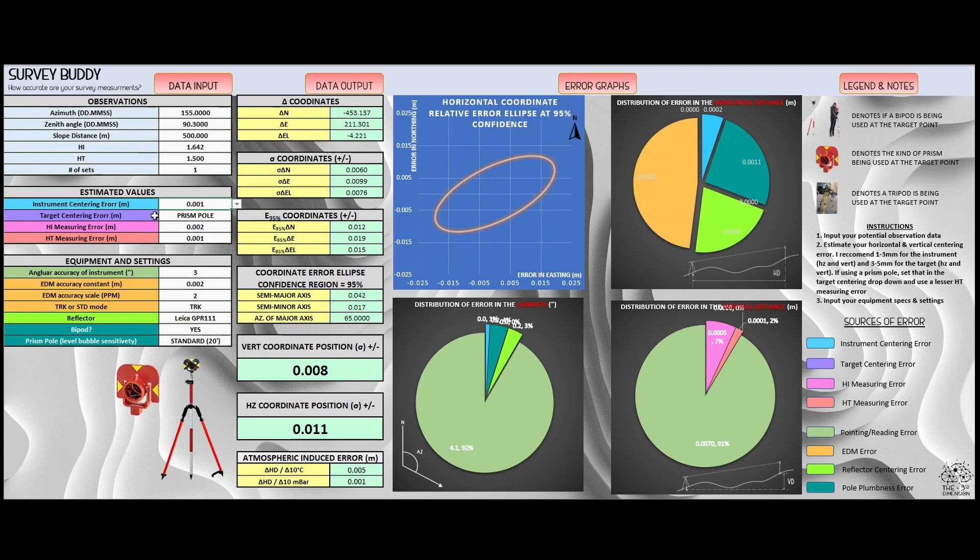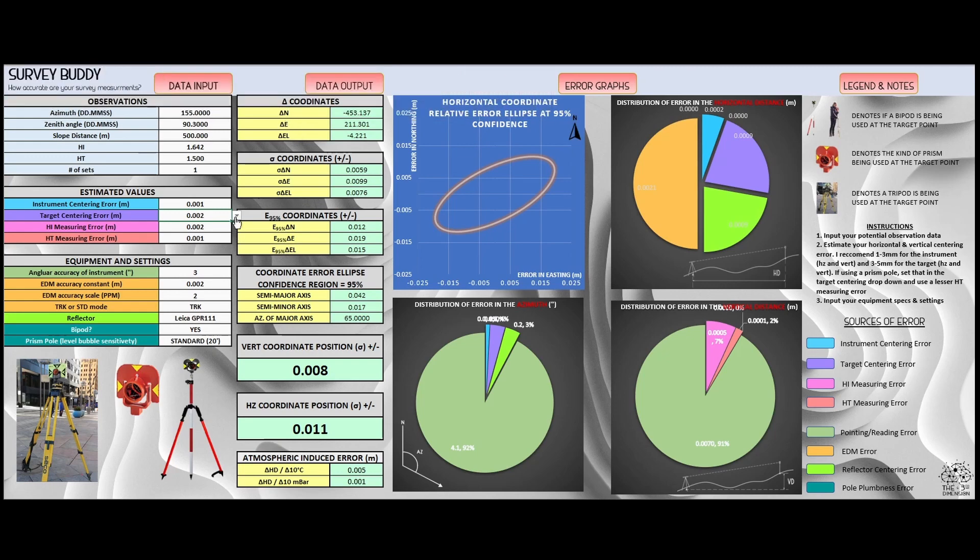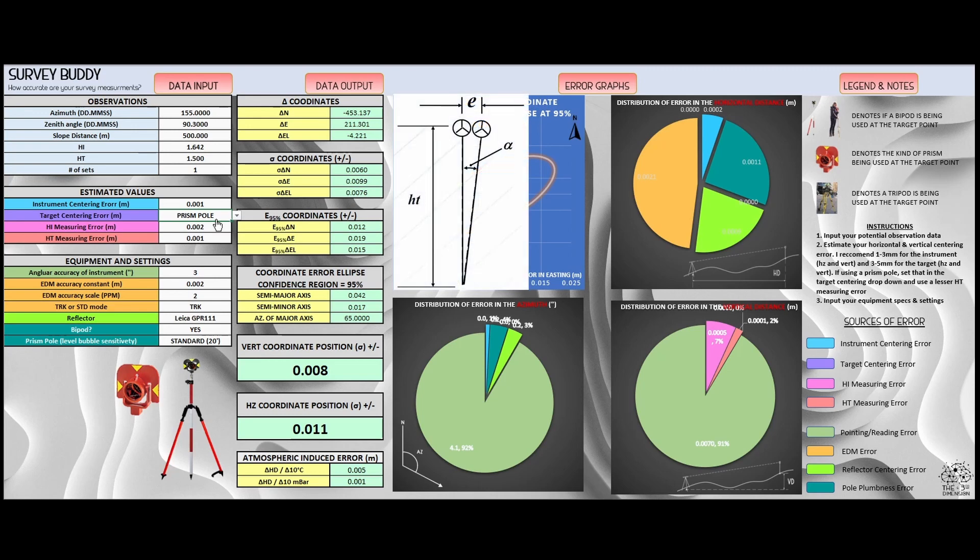Target centering error. This is the same error, but from the target's perspective. Are you using an old tribrack that's been beat around in the back of your truck? Or is it a brand new tribrack with a solid optical plummet on it that you really trust? If you're using a prism pole, select that from the dropdown and this is going to assume that we can precisely center our prism pole on the center of the target. The error introduced at the target from centering the prism pole on the point is going to come from the pole being out of plumb, and it's a different set of equations that will calculate how it's going to affect the final coordinate position.